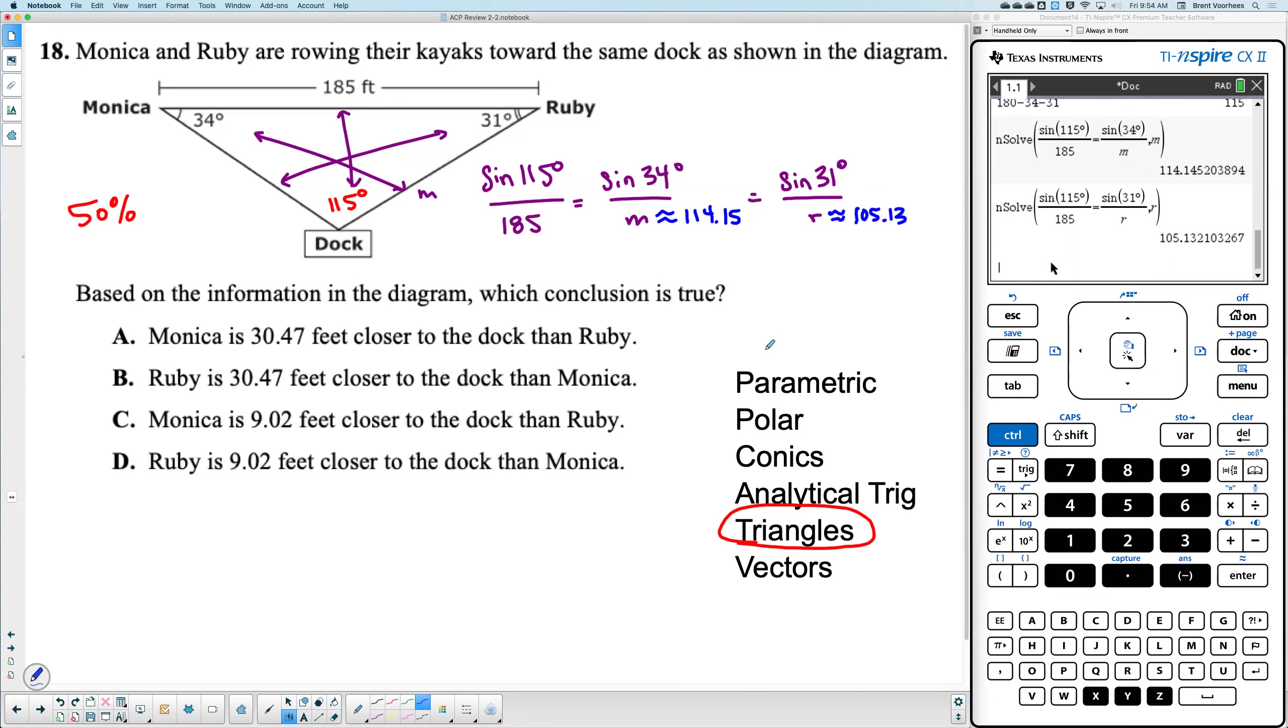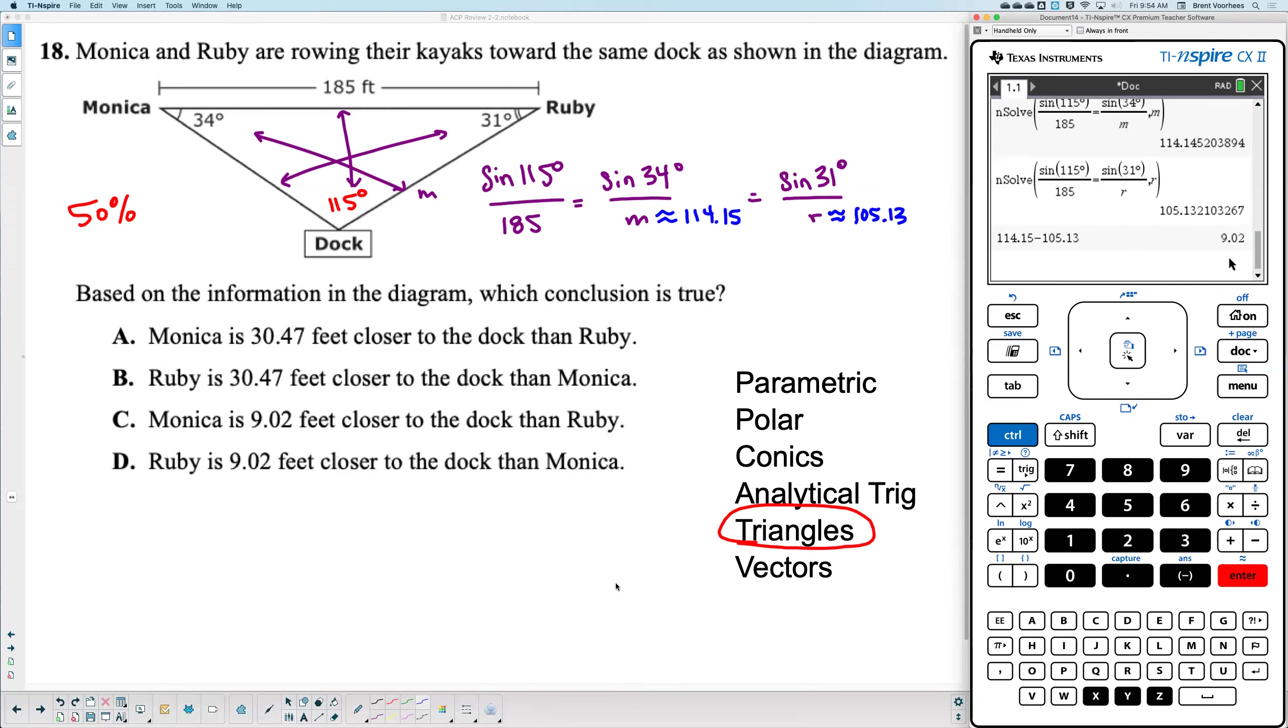Okay. So, we need to know which one is closer. So, I'm going to take, we'll subtract here. It's 114.15 minus 105.13. Okay. It's 9.02. Would you eliminate which two answers? Okay. If you're thinking of distance, which one's closer, the bigger distance or the smaller distance? The smaller. So, this one's closer. Ruby is closer because it's a smaller number. Ruby is 9.02 feet closer than Monica. That would have been the correct answer.